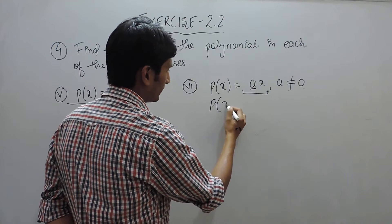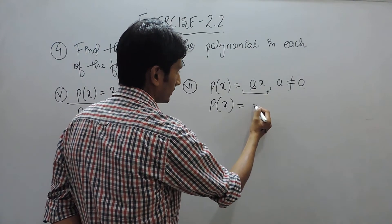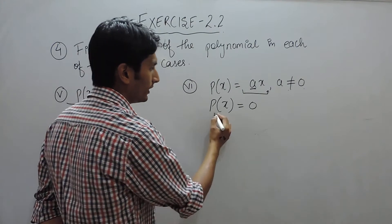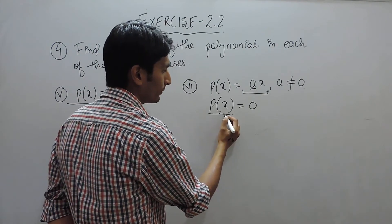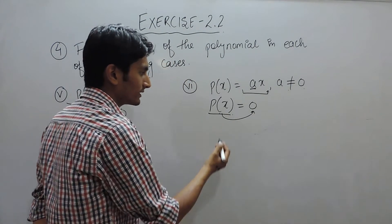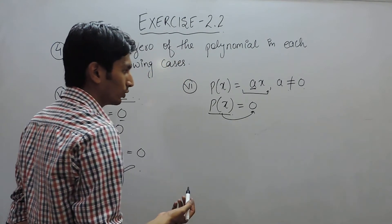If you want to find the zero for this particular polynomial, you have to make this polynomial equal to 0, or you can say the value of this must come out to be 0.